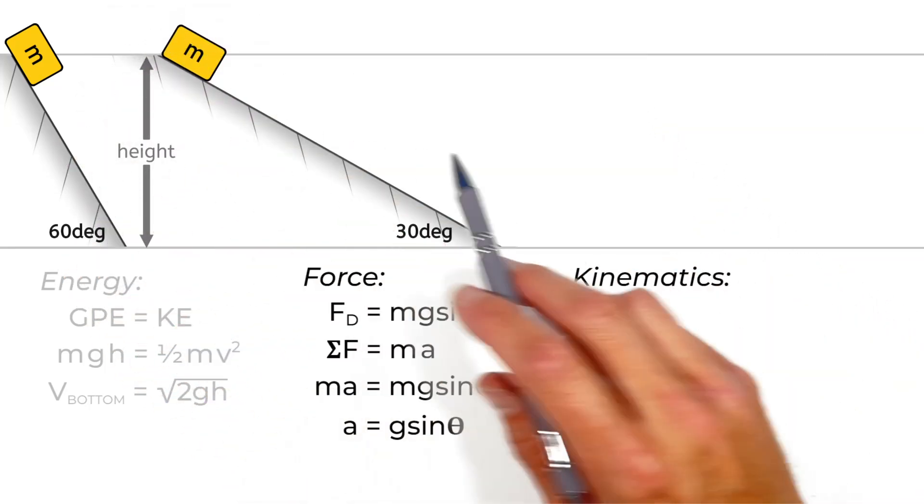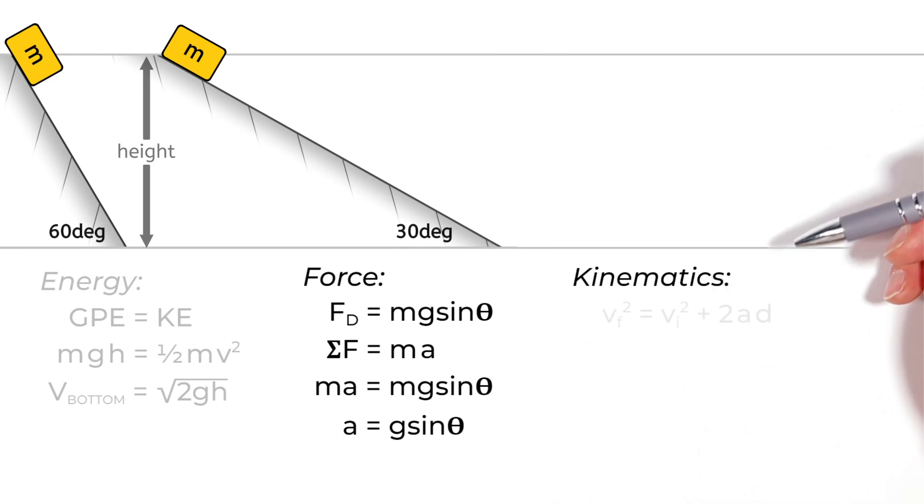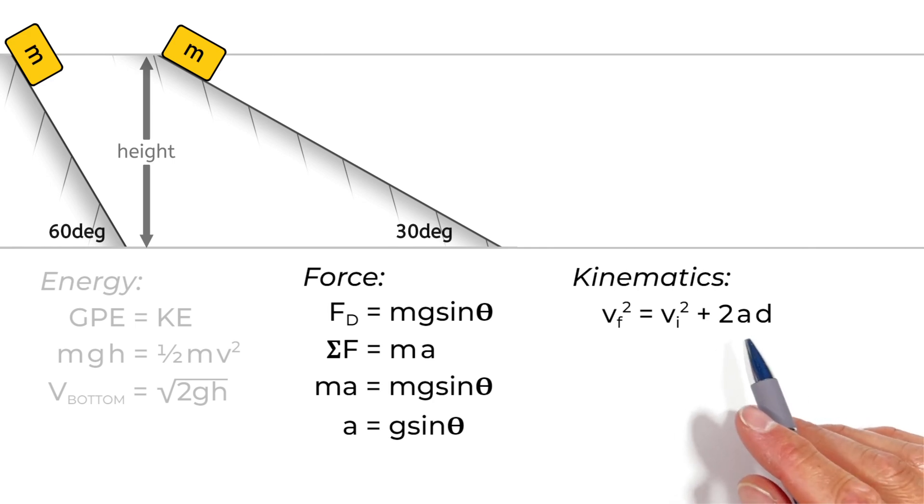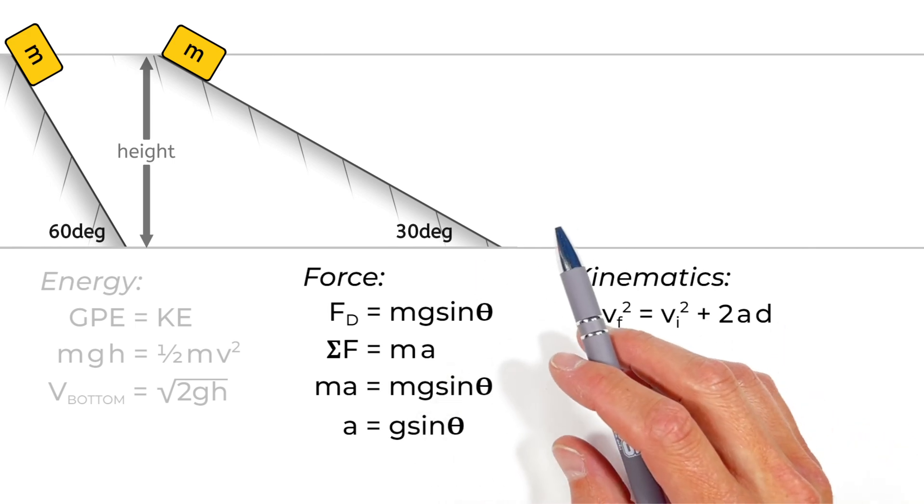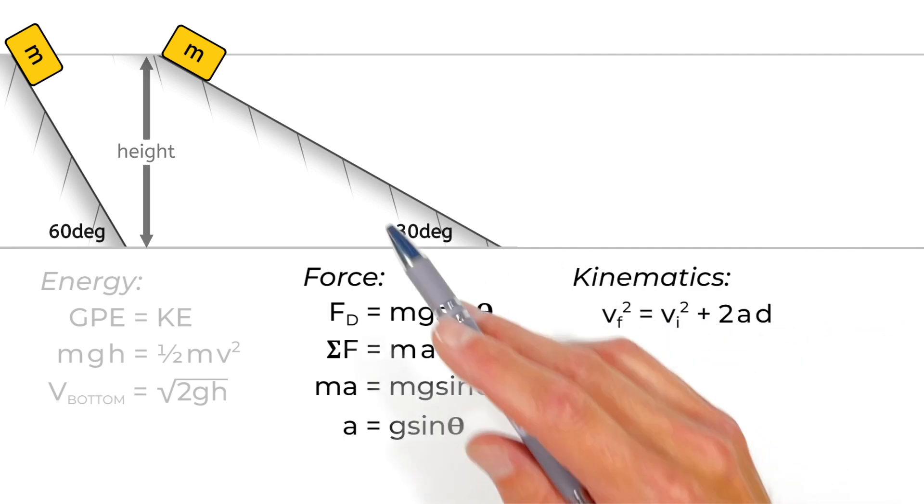And so to understand how that length of the hill comes into play here, I want to turn to the kinematic equations, or more specifically, the kinematic equation VF squared equals VI squared plus 2AD. What this equation tells us is the velocity, in this case, of the block at the bottom of the hill, if we release it from rest at the top of the hill, as a function of the block's acceleration and the length of the hill.